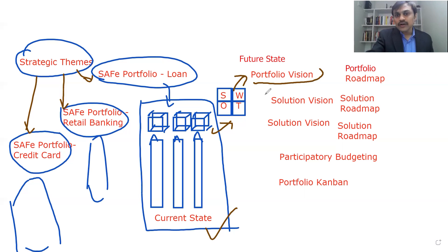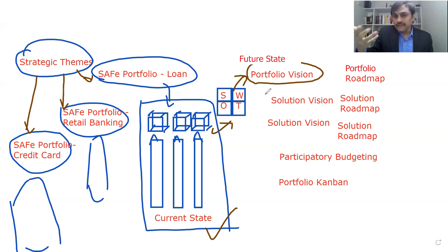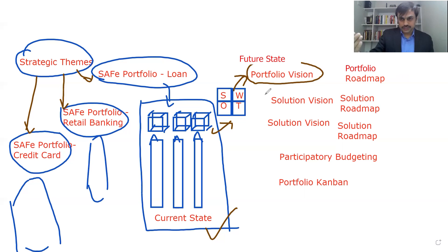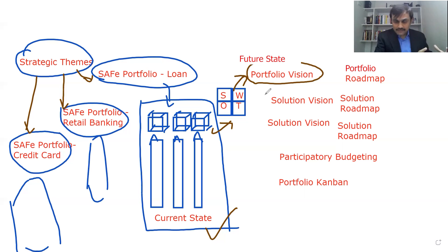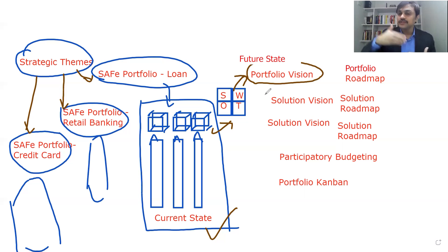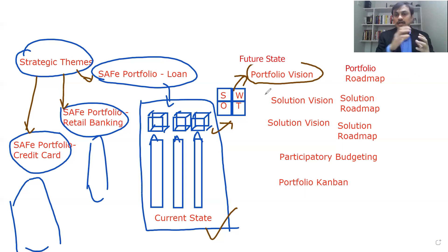The Portfolio Vision has some level of abstraction and is primarily focused on the future state — a direction for the future state. We still don't know exactly how we are going to achieve it, but based on what we have in hand and what our organization wants to do, this is something we want to achieve in the next one, two, or three years. The Lean Portfolio Management group, working with portfolio-level stakeholders through meetings and brainstorming sessions, comes up with this Portfolio Vision.